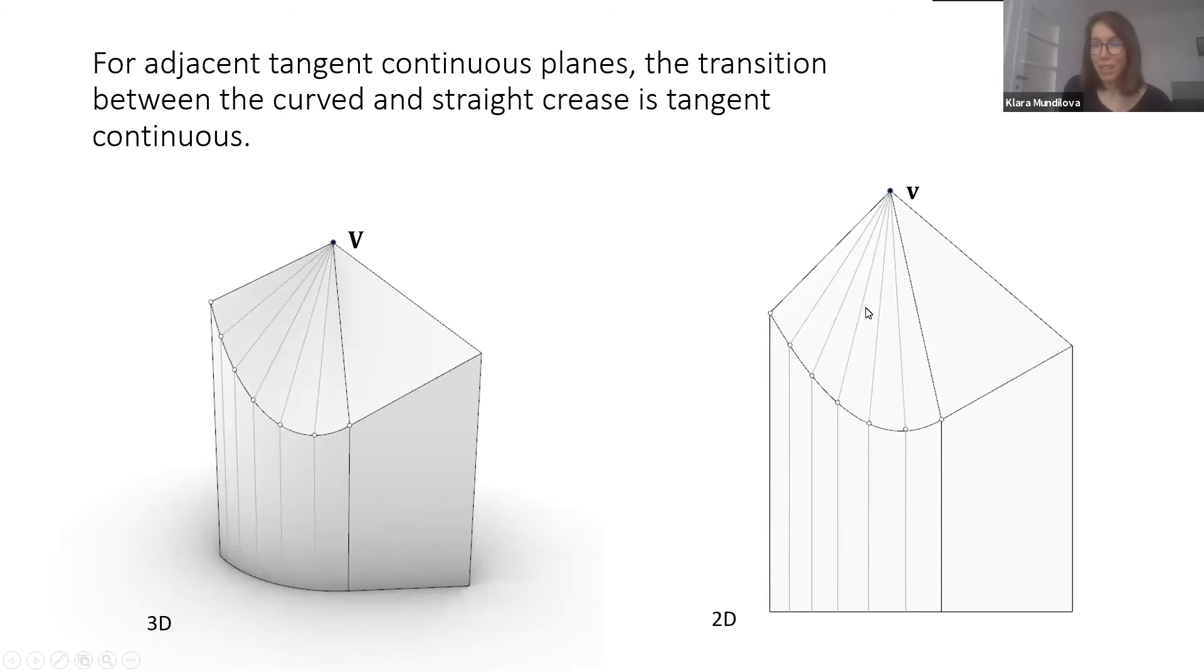The good news is that if we attach another surface, for example a tangent-continuous surface tangent plane to the cylinder, the crease curve will also be tangent-continuous. A straight plane folds along a straight line, and the straight line is just tangent at the end point of this crease curve.